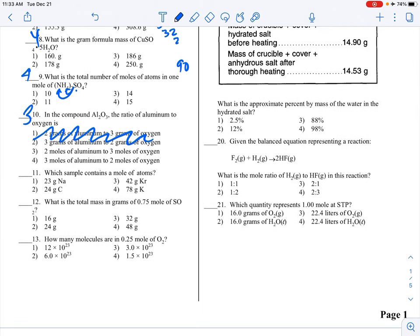Which sample contains 1 mole of atoms? Don't forget that 1 mole equals the GFM. 1 mole also equals Avogadro's number and 22.4 liters of gas at STP, but we're given grams. Which of these lines up with its correct GFM? 23 grams of sodium is our answer. The GFM of carbon is 12, so that's not it. This is 83, actually 84, so nope. Potassium is 39, so that's not it.